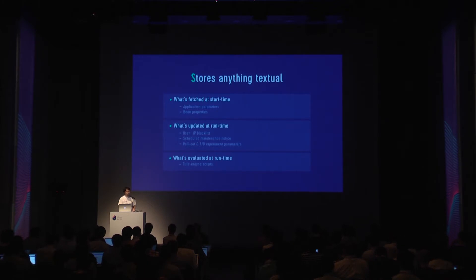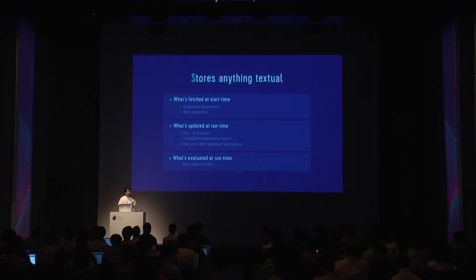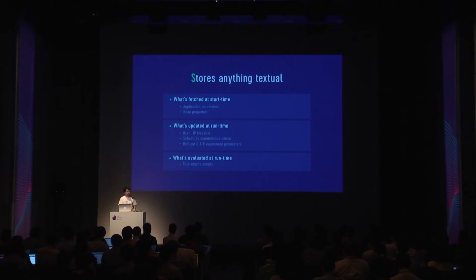A more advanced case would be dynamic settings. Some settings are dynamic, so you have to change them at runtime without restarting your application. Your application needs to watch the repository and apply the new settings as needed. This sort of settings includes user or IP blacklists. For example, if you found some abuser and you want to block their IP address, you don't want to restart your service just because of that — you want it applied at runtime automatically.